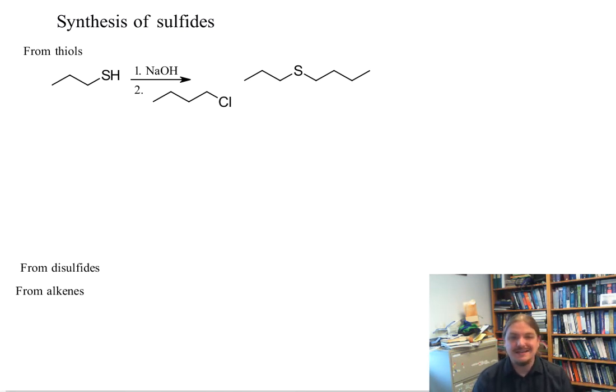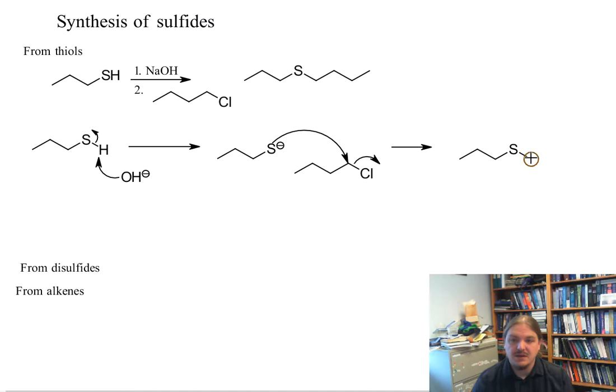This reaction is analogous to the Williamson ether synthesis for the synthesis of ethers. We start with a thiol. We deprotonate it using an appropriate base. And again, because thiols are more acidic than alcohols, we can use weaker bases than we would use for an alcohol. And then the second step of this reaction is an SN2 substitution.